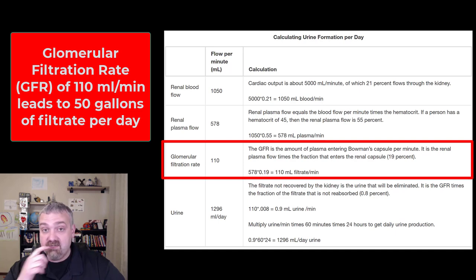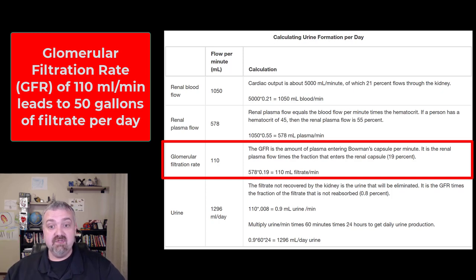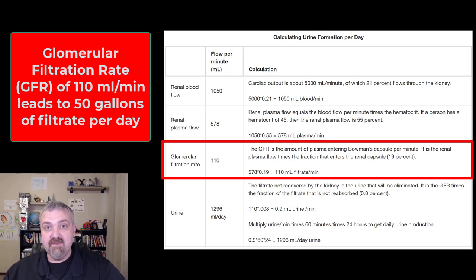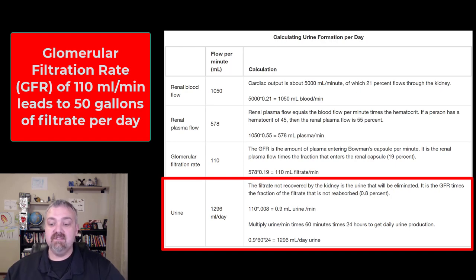The GFR is a really great indirect measurement of kidney function. That 110 milliliters every minute leads to 40 to 50 gallons of filtrate being produced per day, and then your body reabsorbs most of that, so you only produce between 1 and 2 liters of urine.